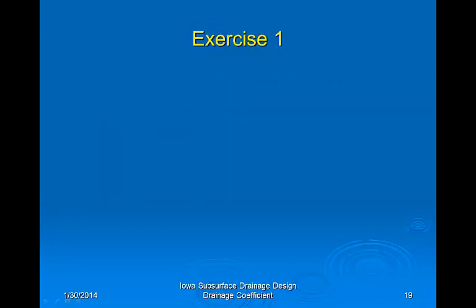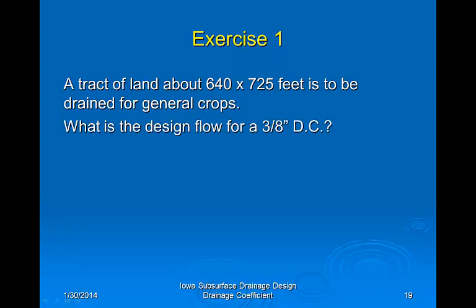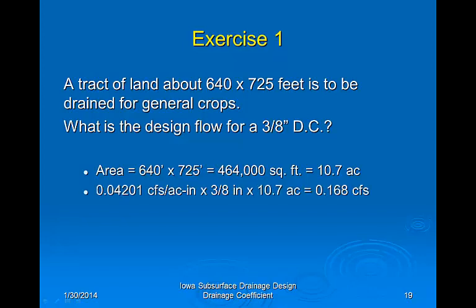Let's look at a field approximately 640 feet by 725 feet, to be drained for general crops. What is the design flow at the outlet for a three-eighths drainage coefficient? First, we determine the area: 640 × 725 feet gives 10.7 acres. Repeating the same calculation, we obtain a design flow rate of 0.168 cubic feet per second at the outlet.